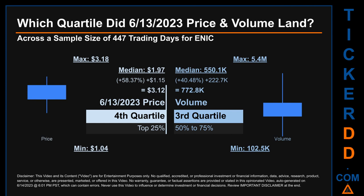Hello, my name is Maria. Which quartile did June 13, 2023 price and volume land in? Across a sample size of 447 trading days, the maximum end-of-day price for ENIC was $3.18 while the minimum was $1.04. Within that price range, June 13, 2023's price of $3.12 landed within the fourth quartile, meaning it was within the top 25% of all sampled end-of-day prices. The day's volume landed within the third quartile — that is, within the 50 to 75% range of all sampled daily volume — which saw a max daily volume of 5.4 million and a minimum of 102,500.